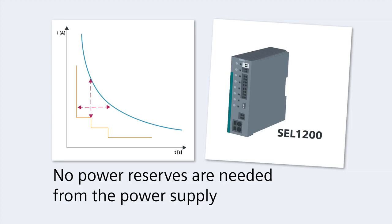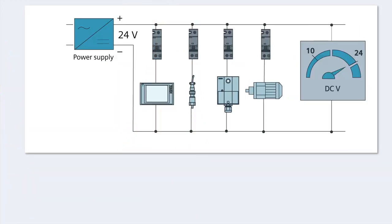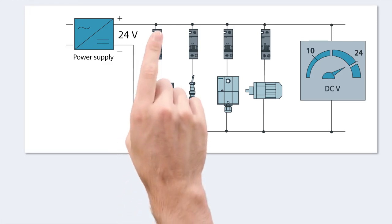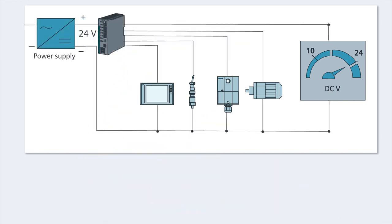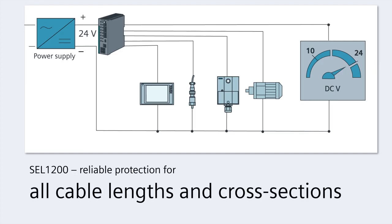Now let's look at the SEL1200 in an application example. Whereas traditional miniature circuit breakers have to be specially adapted to each load circuit, it's not necessary with the CTOP selectivity modules because they safely and reliably protect the connected loads regardless of cable length or cross-section.